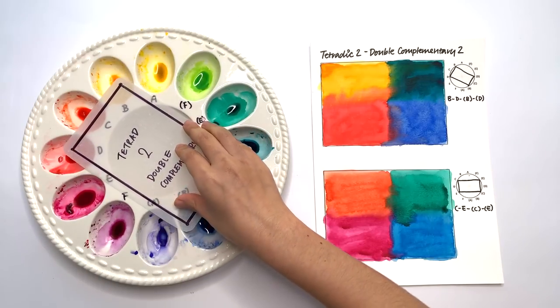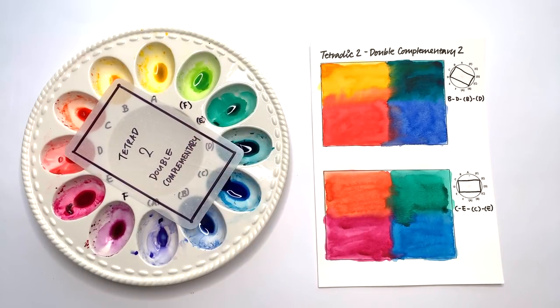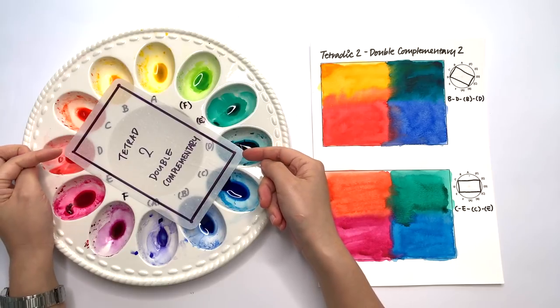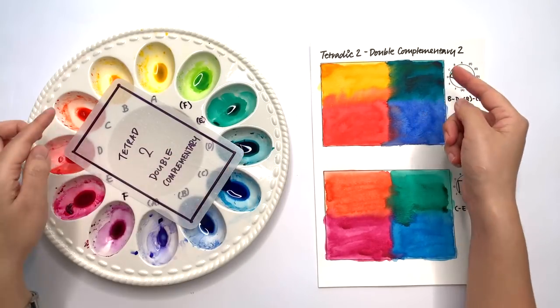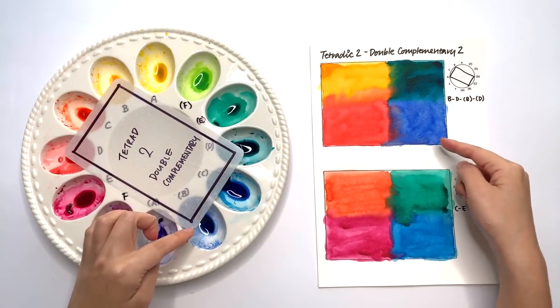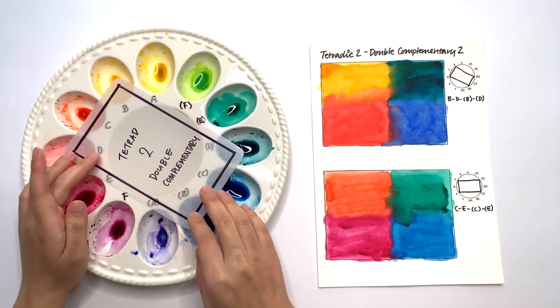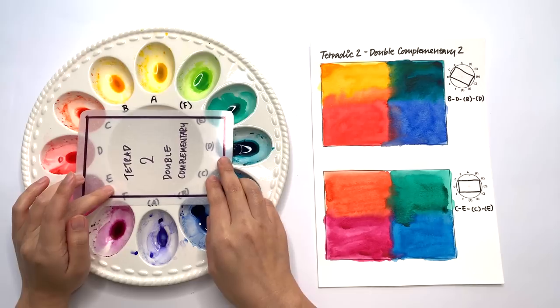Then we move one across again and this time it's the two D's here and here as well as the B colors. Then we move across again.